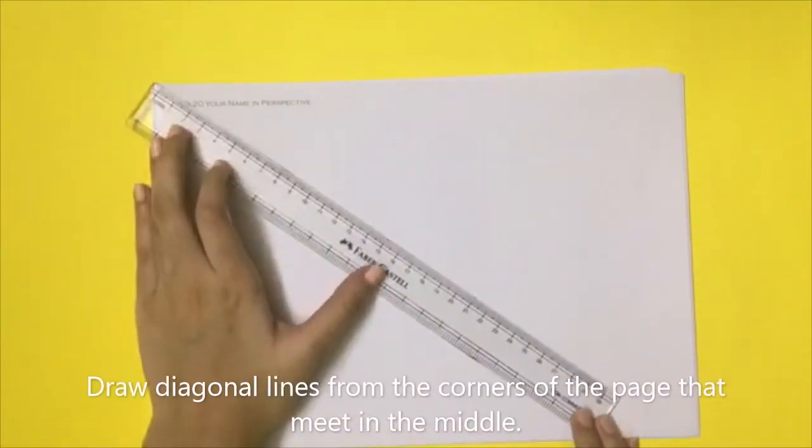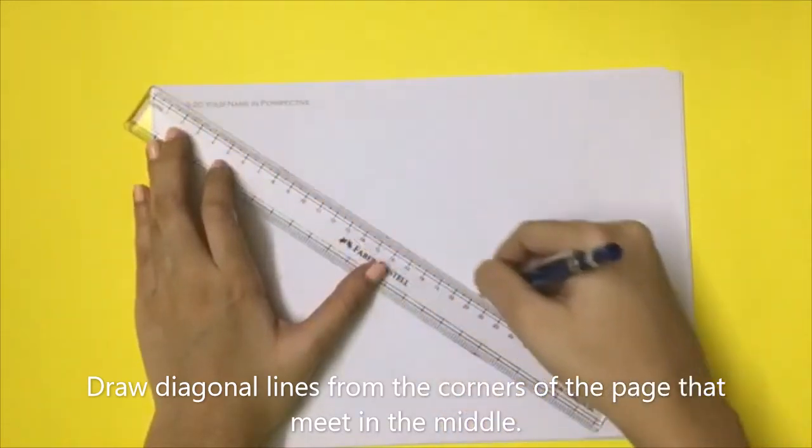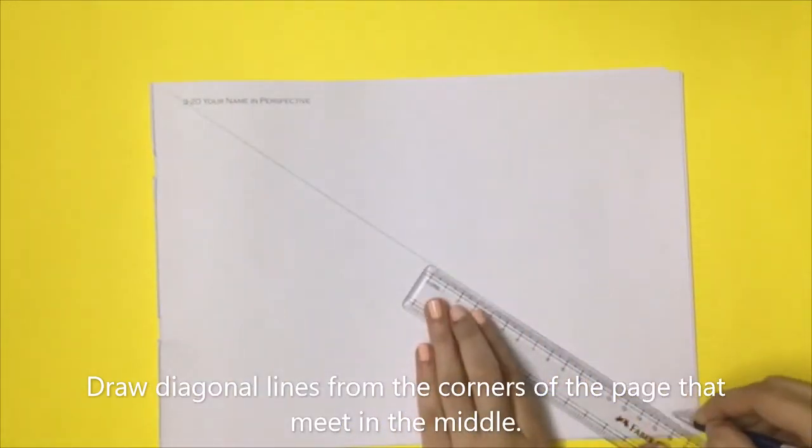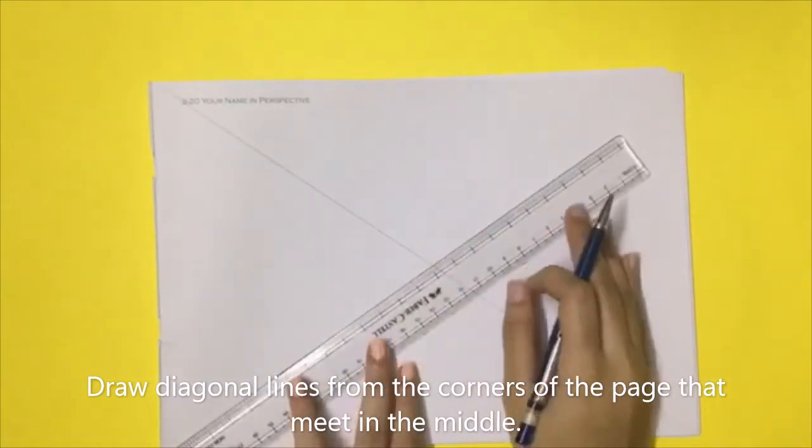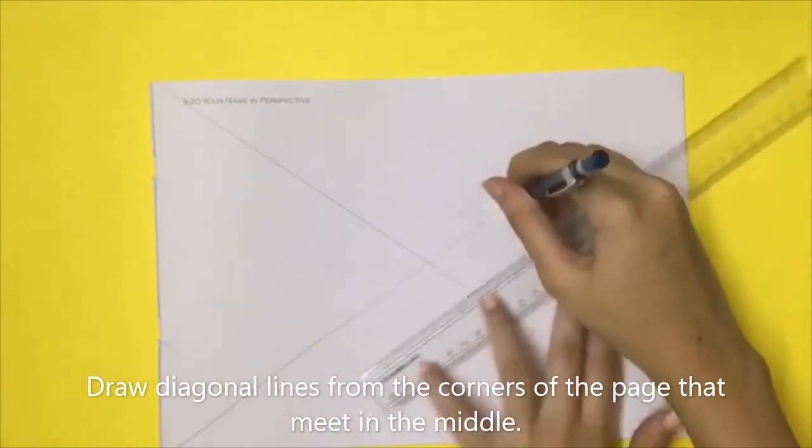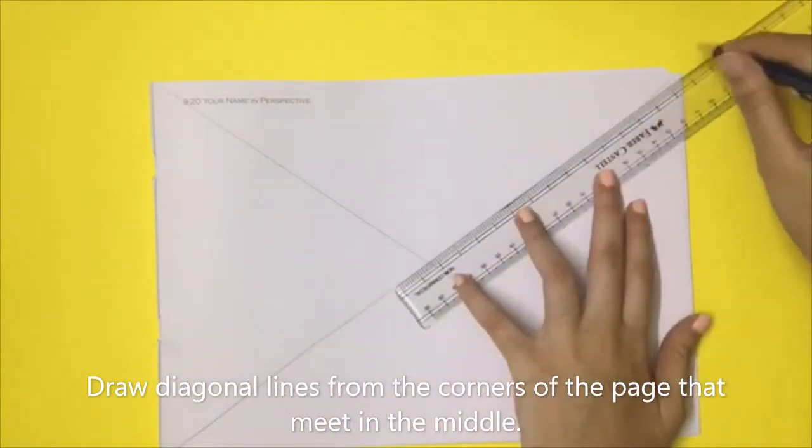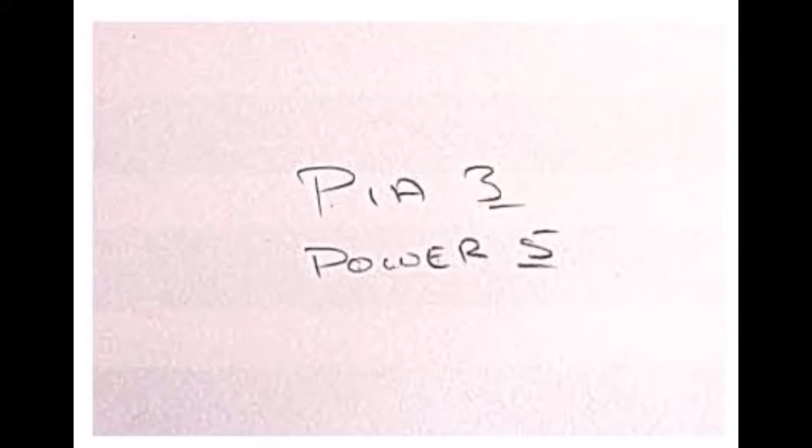Draw two diagonal lines from two corners of the page that meet in the middle. Draw a box in the middle.